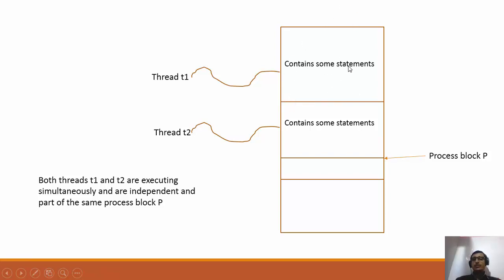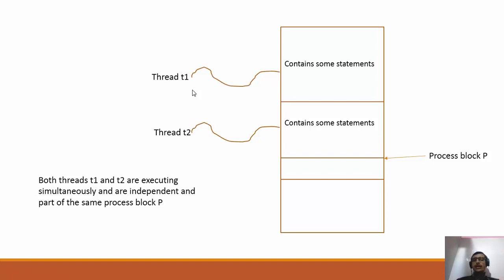We can designate the first block of code to a specific thread called Thread T1, whose responsibility is to execute those lines. Similarly, the second block is designated to Thread T2. Both threads T1 and T2 are part of the same process P, and both are independent of each other — they are sub-processes running concurrently with no dependency between them.